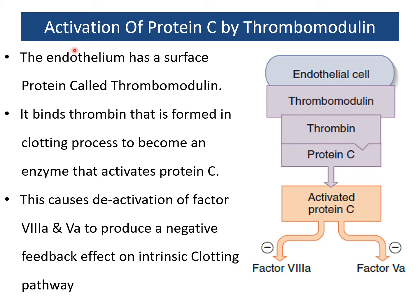The endothelium has a surface protein called thrombomodulin. It binds thrombin formed in the clotting process, and together they become an enzyme that stimulates protein C present in the plasma. When protein C is activated, it inhibits factor 8a and factor 5a, which are part of the intrinsic clotting cascade. This is a negative feedback mechanism provided by endothelial cells by virtue of thrombomodulin on the surface.